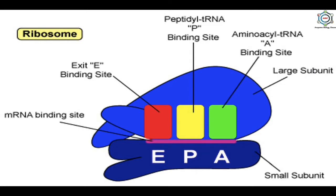A ribosome has one binding site for the mRNA and three binding sites for the tRNA. The first is the P site (peptidyl tRNA site), which holds the tRNA carrying the growing polypeptide chain. The second is the A site (aminoacyl tRNA site), which holds the tRNA carrying the next amino acid to be added. The last is the E site (exit site), where discharged tRNA leaves the ribosome. The first tRNA-amino acid complex directly enters the P site.